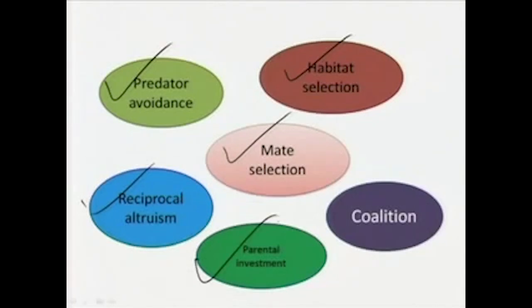Parental investment is also another fundamental characteristic that evolutionary theory has brought to the fore — something that has been with us and is a characteristic we have both in the present and had in the past. Finally, coalition — forming coalitions or groups, forming some sort of understanding and doing work together — is also definitely a characteristic that is with us and is part of our evolutionary legacy.